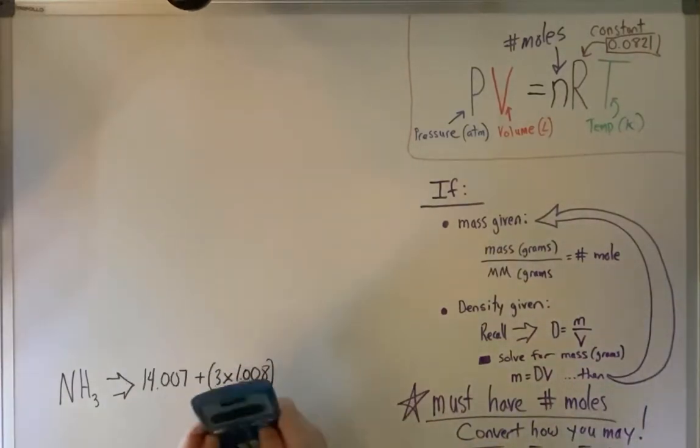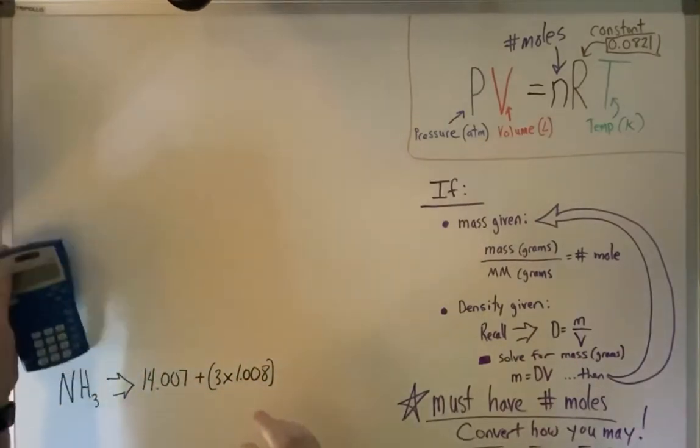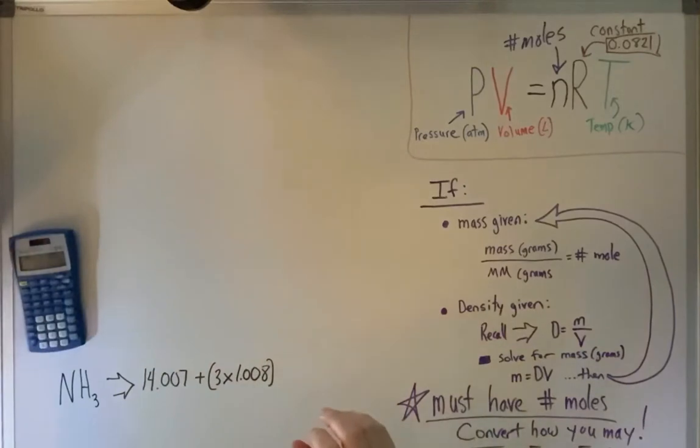So 3 times 1.008 plus 14.007, you get 17.031. So just to have this, our molar mass is going to be 17.031 grams per mole.